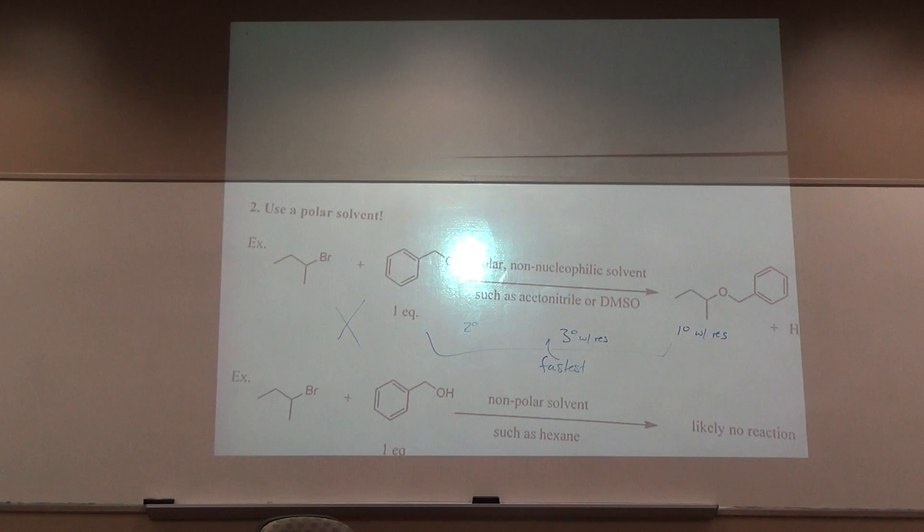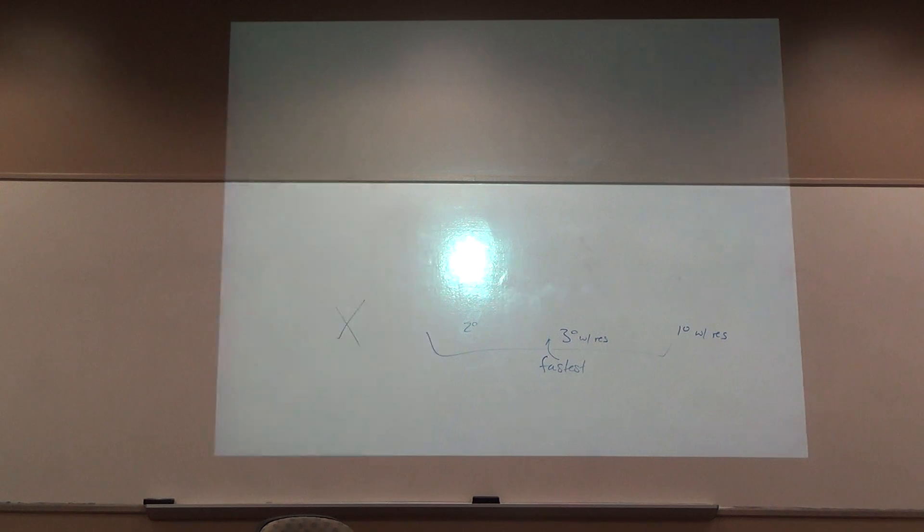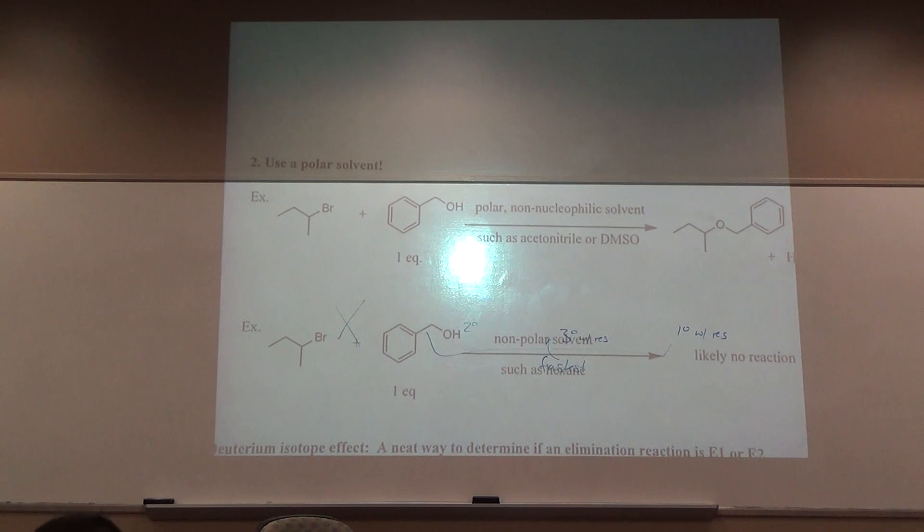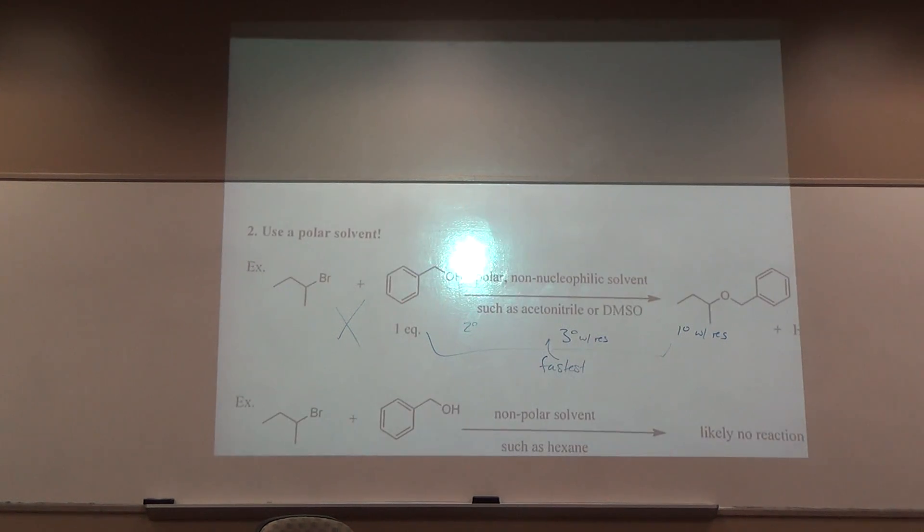Number two. We're under G. Clever ways to make ionization faster. What is another way to make ionization faster? Use a polar solvent.